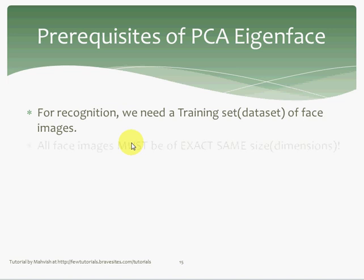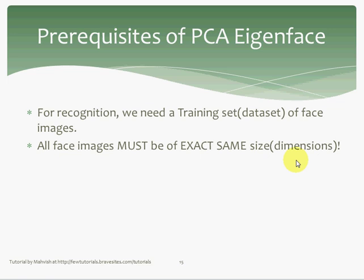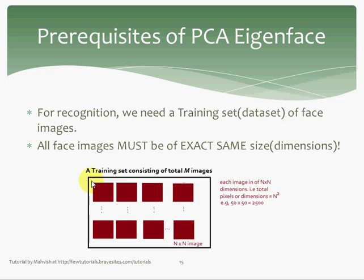PCA eigenface method does not work on images directly. It first converts them to matrix or vector form. So for example, a photo would be flattened — straightened into a vector — where each image is flattened into a column vector. These were the prerequisites and implications of PCA's working that you needed to know before we move into the algorithm steps, which are coming up in the next slide.